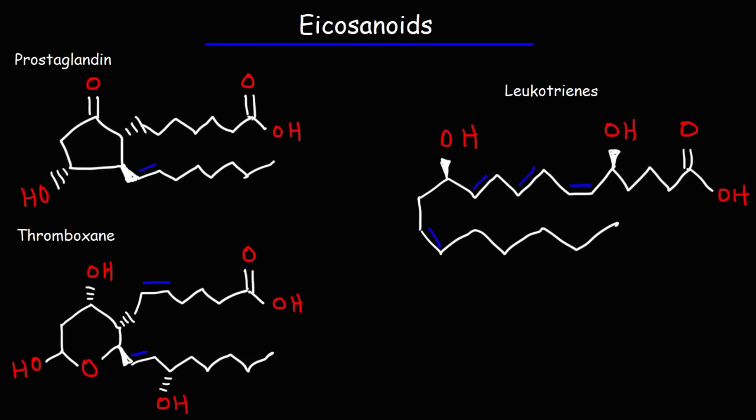So there's three categories of eicosanoids that I'm going to talk about. The prostaglandins, the thromboxanes, and the leukotrienes. The prostaglandins have a five-carbon ring, and they have a total of 20 carbon atoms. The thromboxanes, they have a six-membered ether-containing ring. The leukotrienes, even though they have four double bonds, they have three conjugated double bonds. These are double bonds that alternate with single bonds. So these are all lipids. And notice that they all have a carboxylic acid functional group.